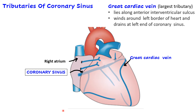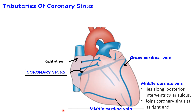The next tributary is the middle cardiac vein, present on the posterior aspect of the heart. It is located in the posterior interventricular sulcus and is accompanied by the posterior interventricular artery, which is a branch of the right coronary artery most of the time, also known as the posterior descending artery. The middle cardiac vein joins the right end of the coronary sinus.